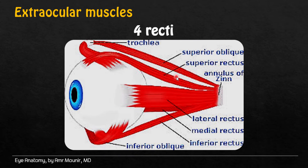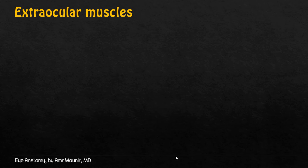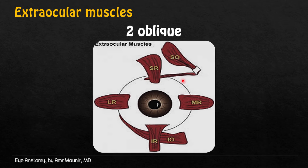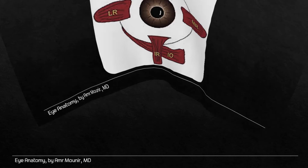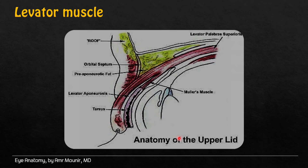The lacrimal ducts include four rectus muscles: superior rectus, inferior rectus, lateral rectus, and medial rectus. Two oblique muscles include superior oblique muscle and inferior oblique muscle. The levetous muscle arises from lessening of sphenoid bone, passing anteriorly until it is inserted in the superior surface and the anterior surface of the tarsus.